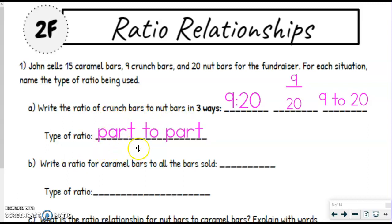By the way, if you want to do P to P, that's fine, and P and W for part versus whole, that's fine. So then we have write a ratio for caramel bars to all of the bars sold. So for caramel bars, that's 15. And notice, we only have one blank here, so we don't need to write all three ways unless it's specifically says, so you get to pick this time.